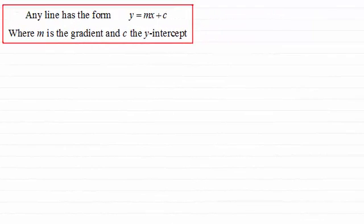Hi there. In this video what I want to do is extend the work that we've been doing from the previous video. Remember in the previous video I showed you that any line has the form y equals mx plus c, where m was the gradient and c was the y-intercept. So I'm assuming that you've watched that.